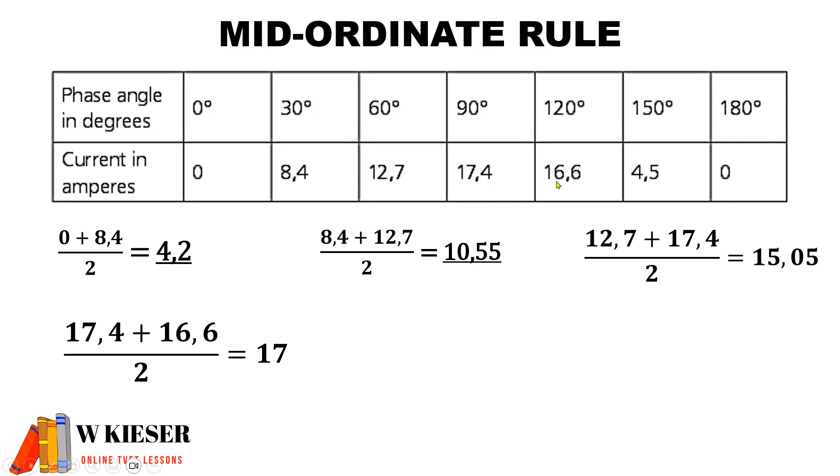17.4 plus 16.6 divided by 2 gives you 17. 16.6 plus 4.5 divided by 2 gives you 10.55. And our last mid-ordinate value is 4.5 plus 0 divided by 2, which gives you 2.25.